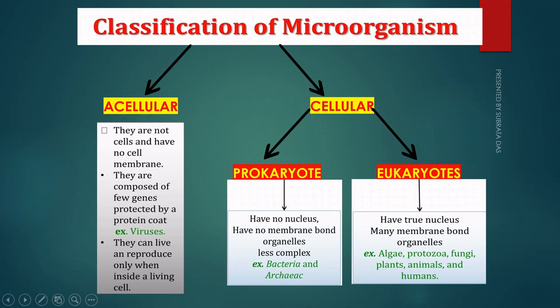Acellular microorganisms can live and reproduce only when they are inside a living cell. If they are inside a living cell, they can reproduce. If they are outside a cell, they cannot reproduce. So these are acellular microorganisms.